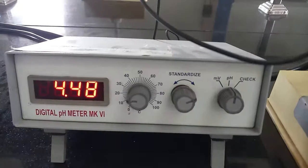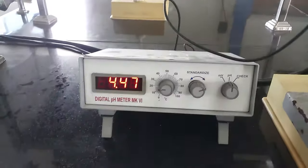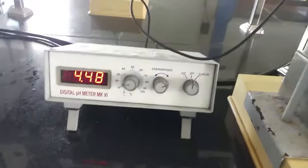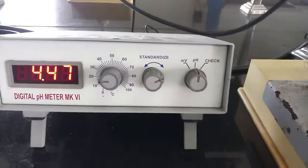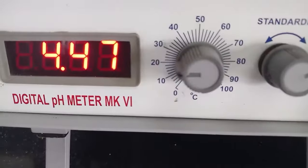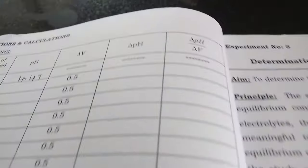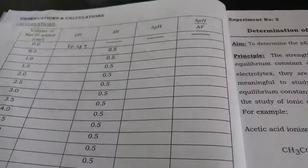Now this is the digital pH meter. It gives the pH value, the potential of hydrogen ion concentration. First we have to record the initial pH in this observation part.